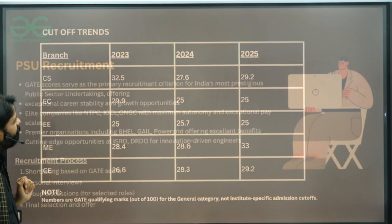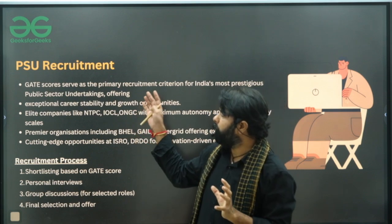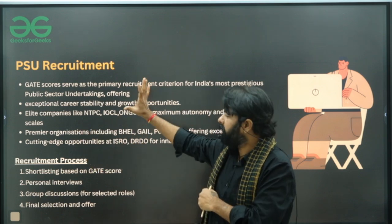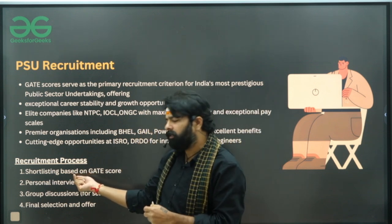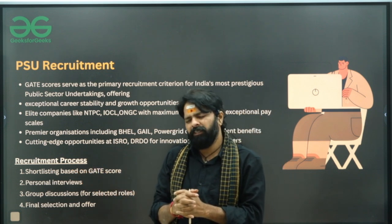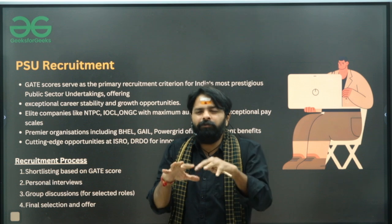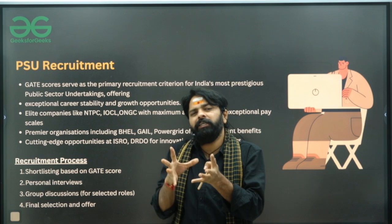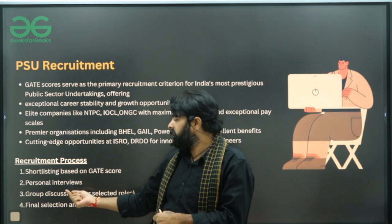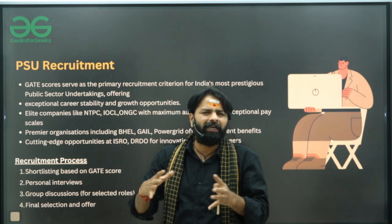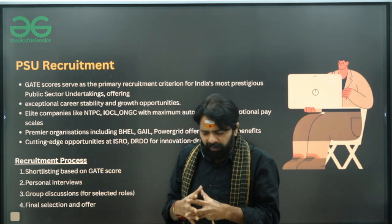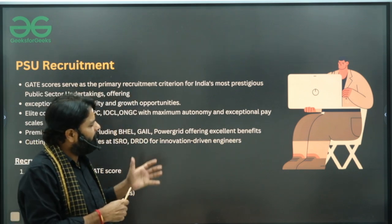One major advantage of the GATE score is PSU recruitment. PSUs recruit through GATE score but also conduct other screening processes. First, shortlisting is based on GATE score, then candidates are called for interviews, GD rounds, and sometimes medical tests. Shortlisting is very important — for that you need a good GATE score. If you get below 500 rank or above 650-700 score, there is a high probability to get into PSUs.